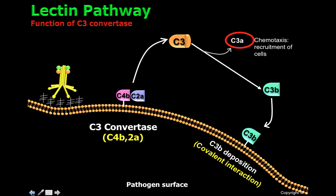The C3-convertase will be able to clip several molecules of C3, depositing several molecules of C3B on the cell surface. Because C3B can be recognized by macrophages and neutrophils and promote phagocytosis, C3B is also considered an opsonin in a process called opsonization.